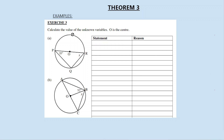Now let's look at examples using Theorem 3 — calculate the values of the unknown values, where O is the center. We need to find x. Because of Theorem 3, we know that angle Q is equal to 90 degrees. Why? It's an angle in a semicircle.